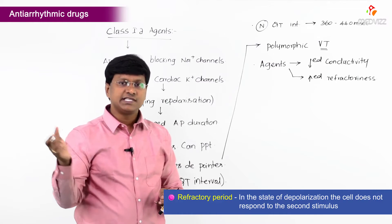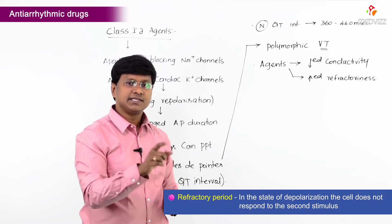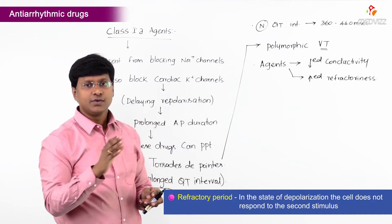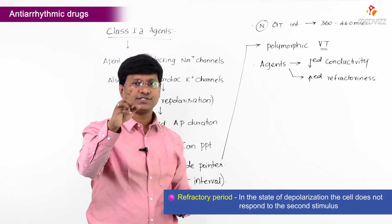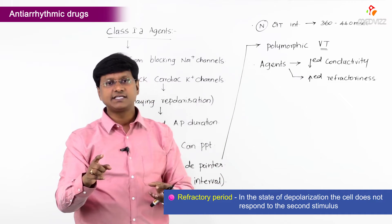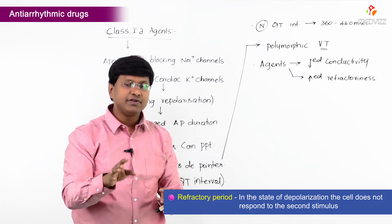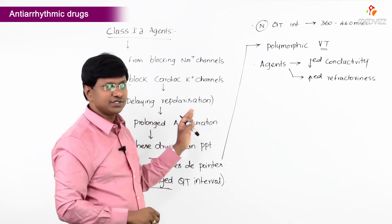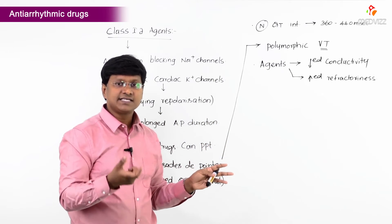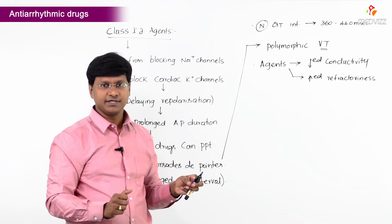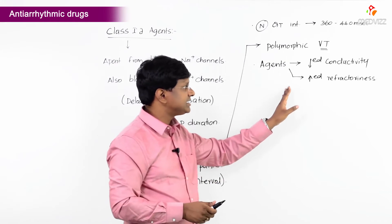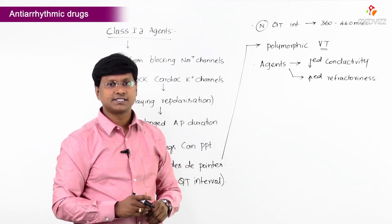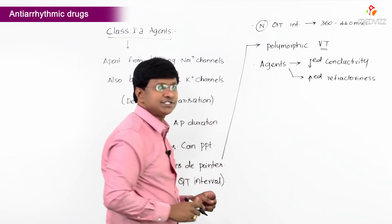Refractoriness refers to the refractory period — the period during which a second stimulus will not stimulate the cell while it is in the phase of depolarization. Because the action potential duration is prolonged, the cell remains in the refractory period longer. That is why these drugs increase the refractoriness of the cardiac cells.